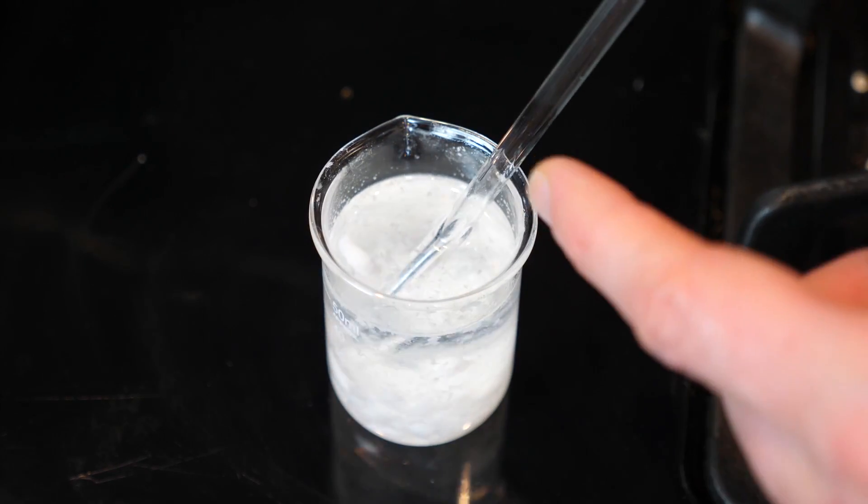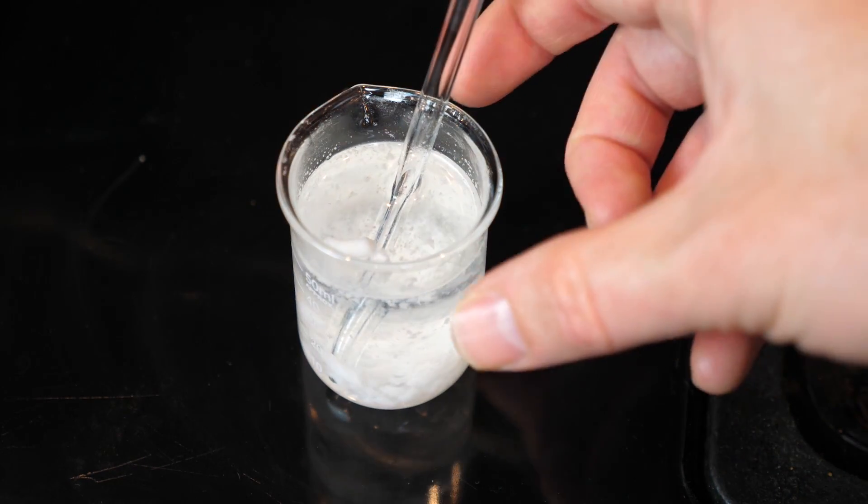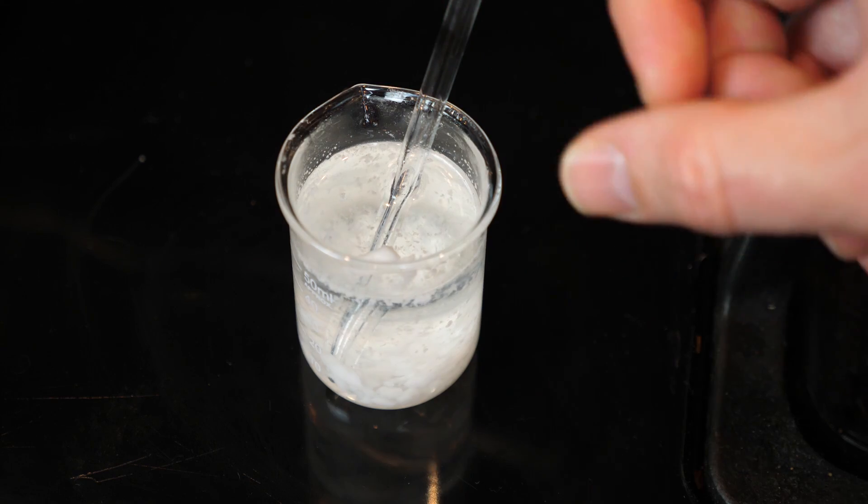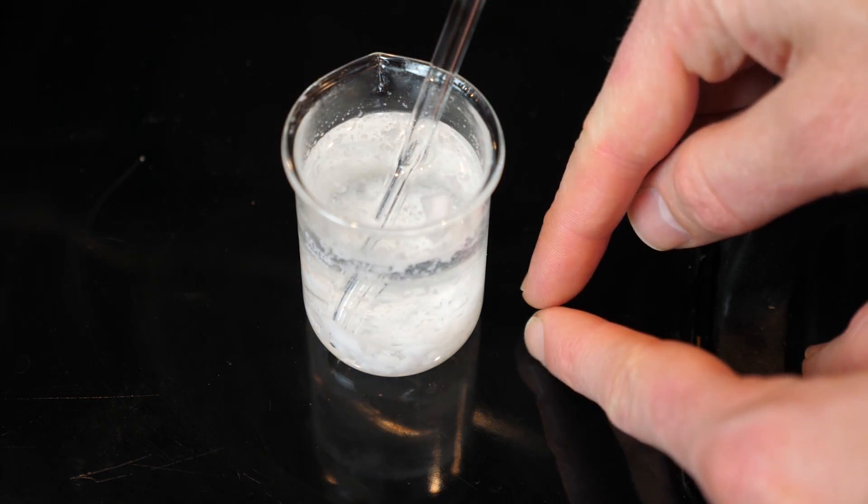So my egg whites are pretty well dissolved in here now. So now I have a super concentrated solution of egg whites and urea. But the problem is that the proteins are still denatured.